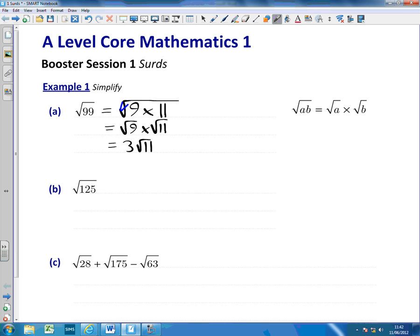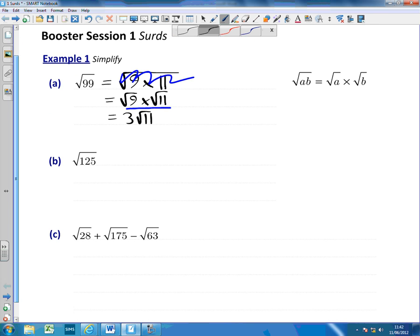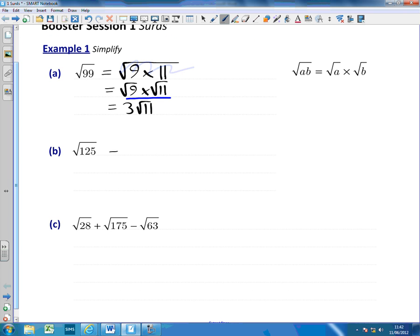Now some people like to avoid that step entirely, go straight to that step. That's fine. I'm going to do that here for B. So we think what square numbers go into there. Now I think we can see that 25 is going to go into there. So I can write this as √25 times √5. Just check there that 5 times 25 does equal 125. So now we can write this as 5√5.